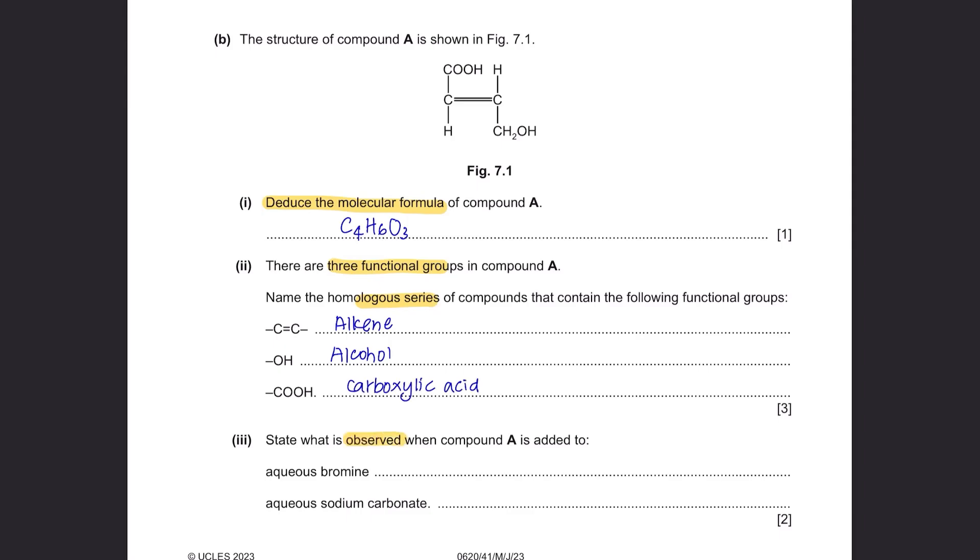Part 3. State what is observed when compound A is added to aqueous bromine. Compound A is an alkene. When reacted with bromine, the solution of bromine will turn from brown to colourless. And the reason is because alkene consists of double bond, therefore it can be broken and accept one bromine atom. And the second is aqueous sodium carbonate. Sodium carbonate consists of CO3, which will produce carbon dioxide as a product. So you can observe effervescence.